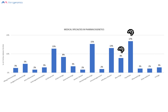The second largest group are those for cancer patients, meaning cancer patients could potentially test themselves genetically to see if the medication they are prescribed will even work for them prior to taking it. The third largest group are those affecting cardiovascular diseases — so all conditions discussed have significant benefits from pharmacogenetic testing.